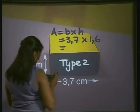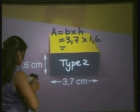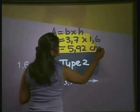Using our calculator we work out 1.6 multiplied by 3.7, and that gives us 5.92 centimeters squared.